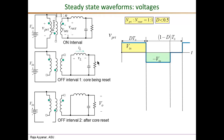The first waveform we will look at is the voltage of the primary winding, V_primary. During the on interval of duration D times T_s, the voltage V_primary is V_in, as seen from the on-interval equivalent circuit.